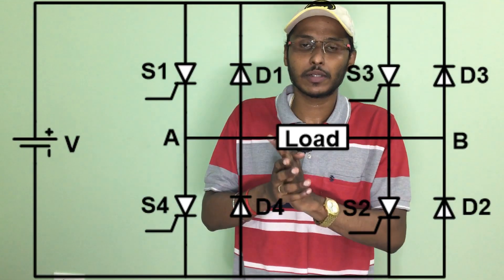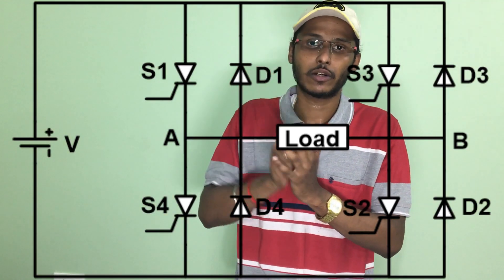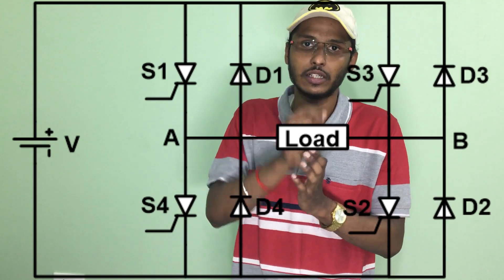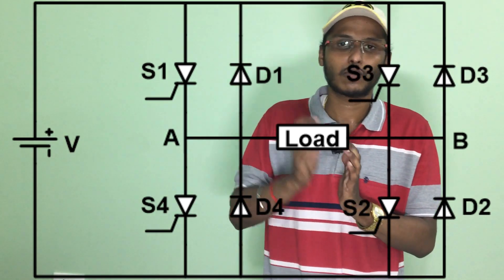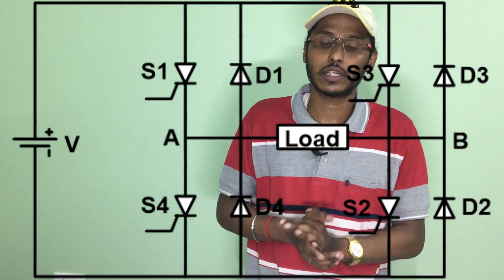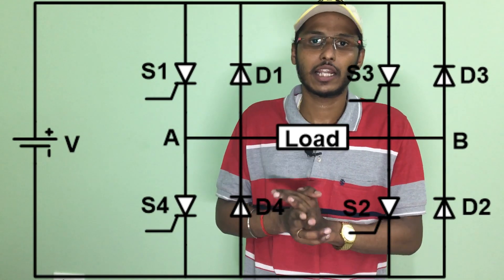Now, if we understand this, we need a circuit. We have a DC source in this circuit. We have switches S1, S2, S3, and S4. If we switch these, we can switch the source. In parallel, we have diodes D1, D2, D3, and D4. I will show you the video on the thyristor and SCR — that is why we connect the source this way.